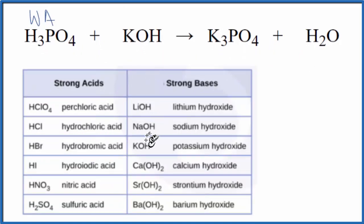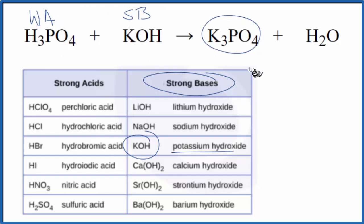For KOH, that's right here. Potassium hydroxide is a strong base. So now we know the strength of the acid and the base that produce this potassium phosphate.